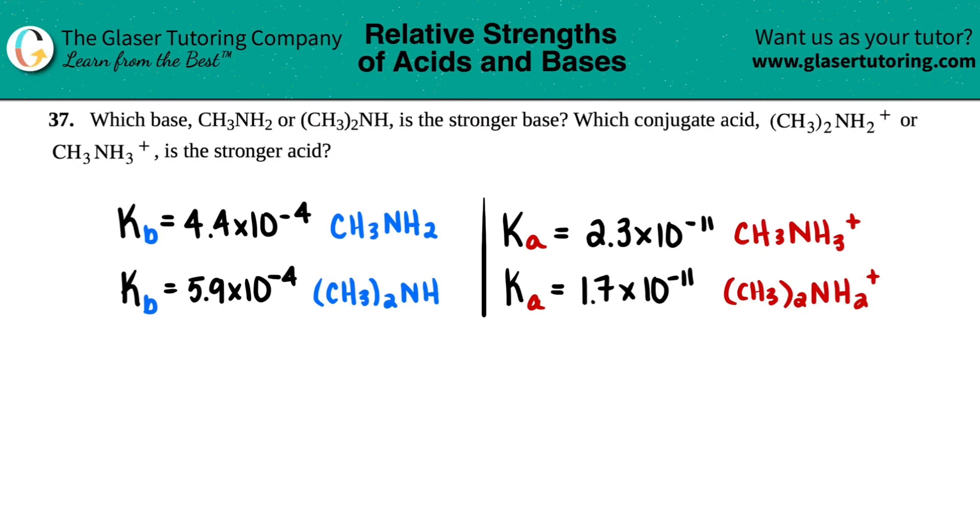Number 37. Which base, CH3NH2 or (CH3)2NH, is the stronger base? And then which conjugate acid, (CH3)2NH2+ or CH3NH3+, is the stronger acid?